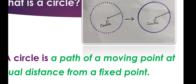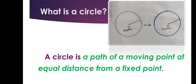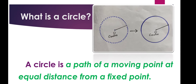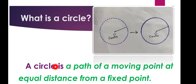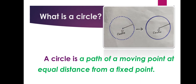A circle is nothing but a path of a moving point at equal distance. Consider one point is moving at equal distance from the fixed point — then you will get a curve-shaped structure that is called a circle. Recall once again: a circle is a path of a moving point with a condition — at equal distance from a fixed point.